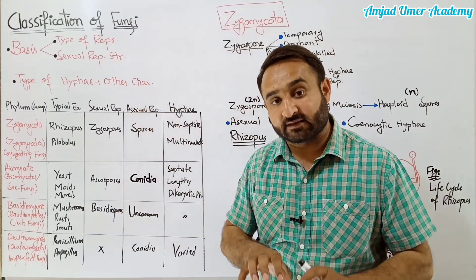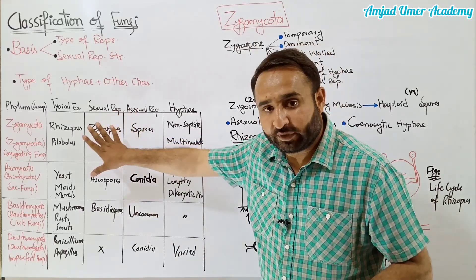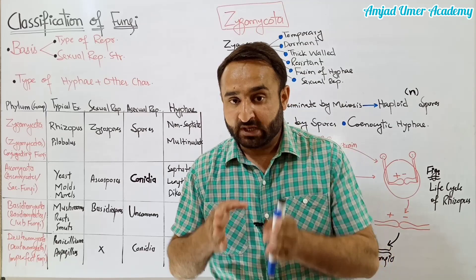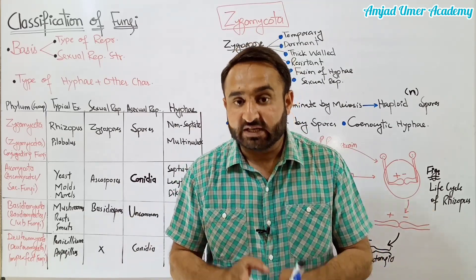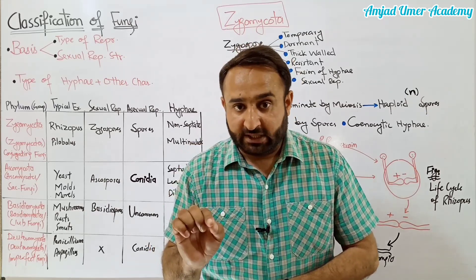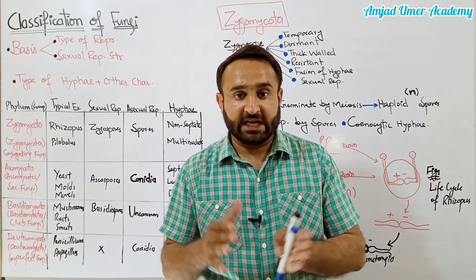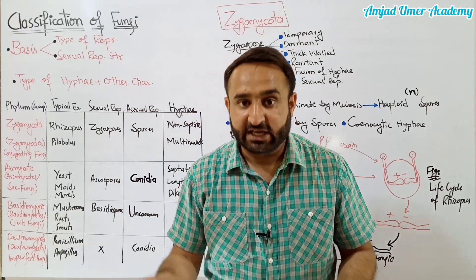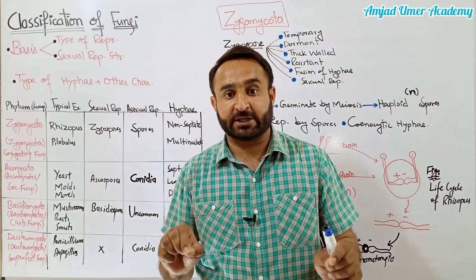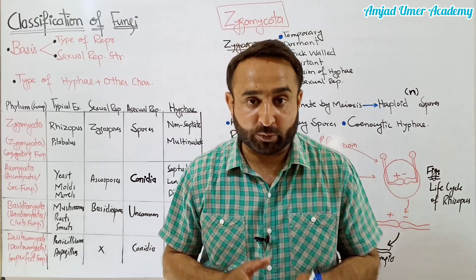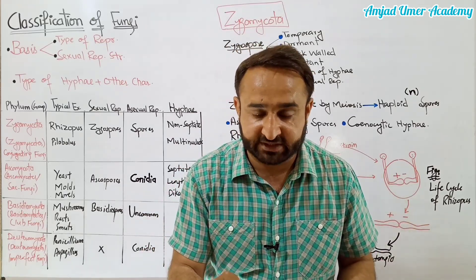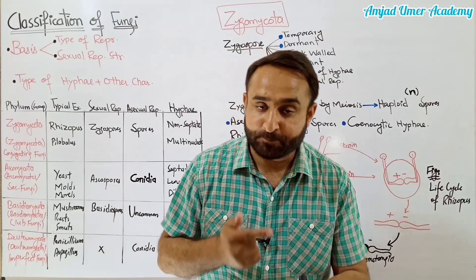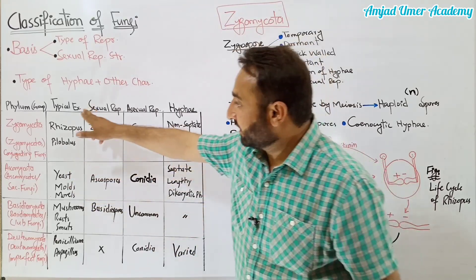Some other characters are also considered while classifying the fungi. Students, yahan jo table bana hua hai, yahan fungi ke 4 groups bataye gaye hain: Zygomycota, then Ascomycota, Basidiomycota, and Deuteromycota. Zygomycota mein shamil tamam fungi ko Zygomycetes ya conjugating fungi kaha jata hai. Ascomycota mein shamil tamam fungi Ascomycetes kehlati hain, ya inko sac fungi bhi kaha jata hai. Basidiomycota mein shamil tamam fungi Basidiomycetes kehlati hain, inko club fungi bhi kehte hain. Deuteromycota ko Deuteromycetes - the imperfect fungi - kaha jata hai, kyon ke in mein sexual reproduction nahi hoti; in mein sirf parasexuality hoti hai.